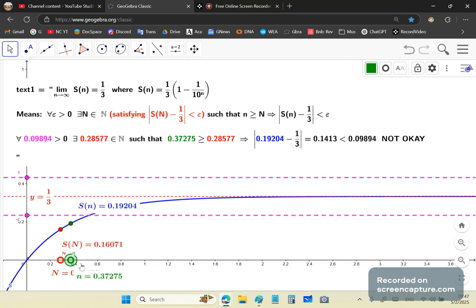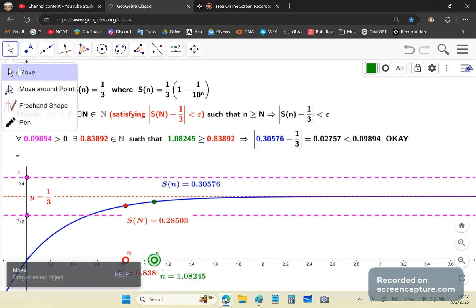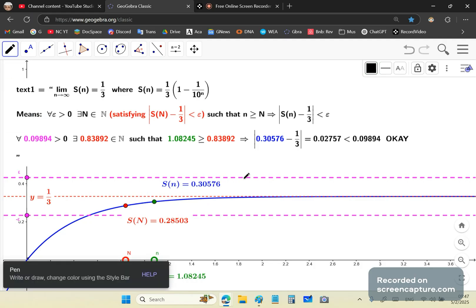Basically as long as this guy, as long as one of them are in the region and n is bigger than S(n) then it's okay. Or if both of them are in the region then still as long as this little n falls within this region here. This region here.